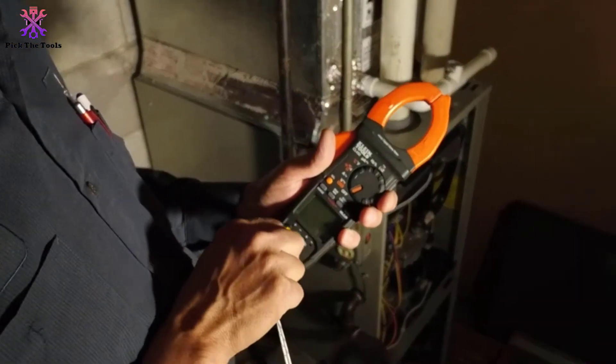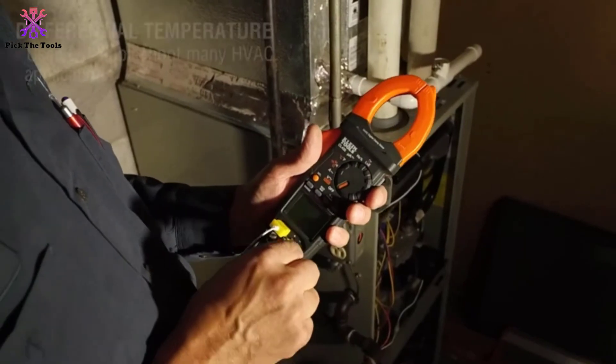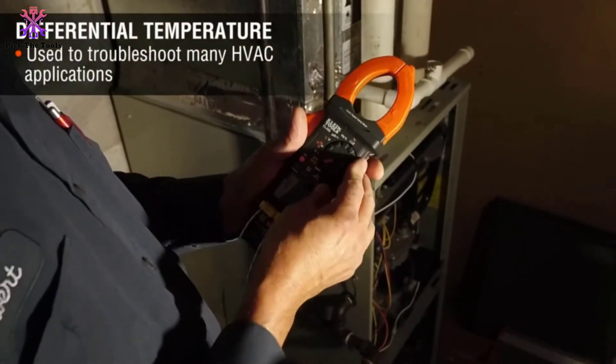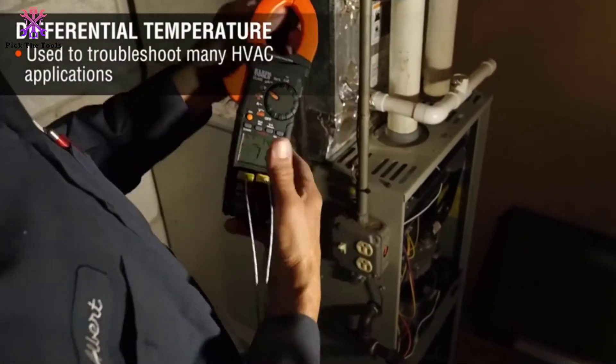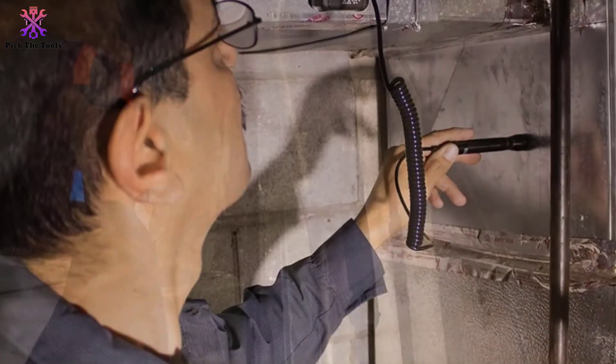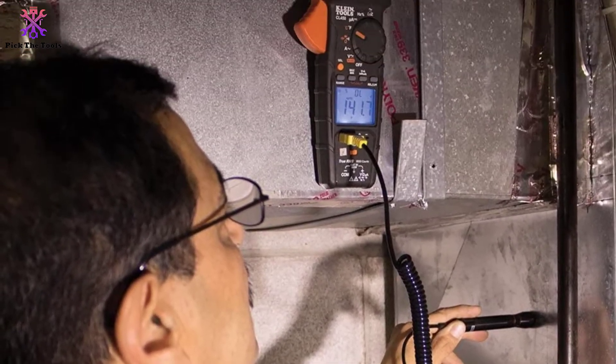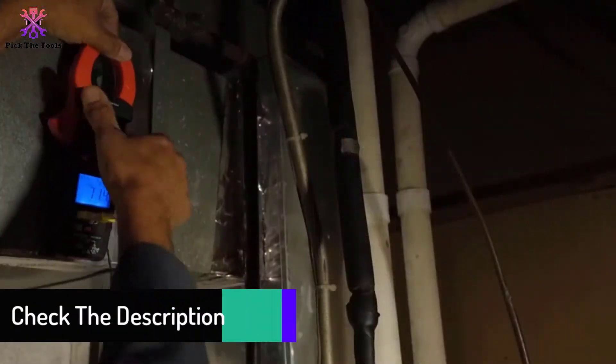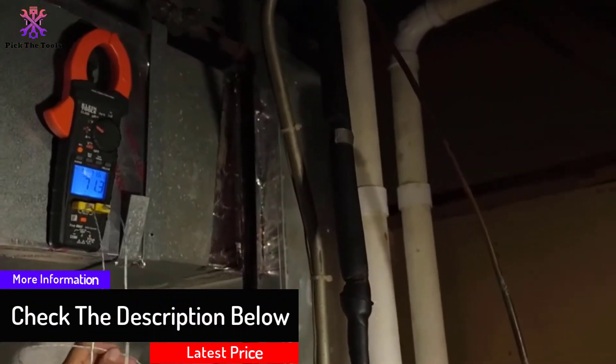The CL450 uses automatically ranging True Root Mean Squared, TRMS, measurement technology to provide accurate measurements of DC millivolts and microamps, differential temperature, digital temperature calibration, inrush current, and more specifically for HVAC applications.